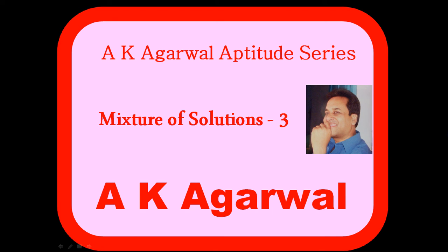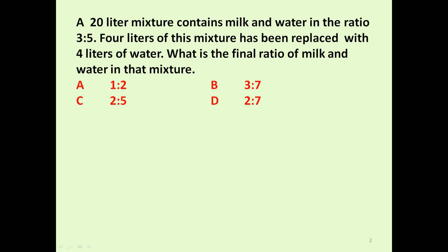Hello friends and welcome to AK Agarwal's aptitude series. In this session we are going to learn a technique for solving a problem on mixture of solutions. The given problem is: a 20 litre mixture contains milk and water in the ratio 3 to 5. Four litres of this mixture has been removed and replaced with 4 litres of water. So the ratio of milk and water will change.